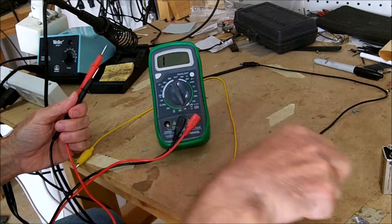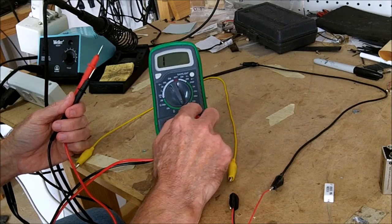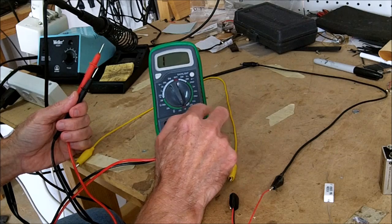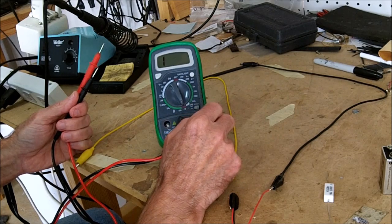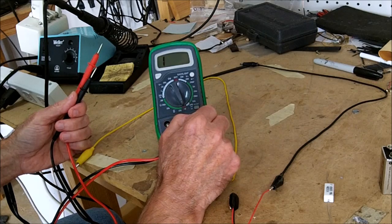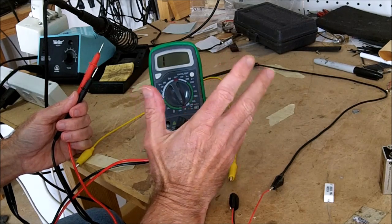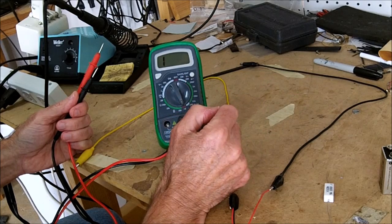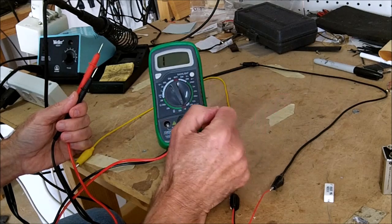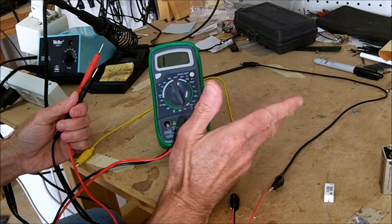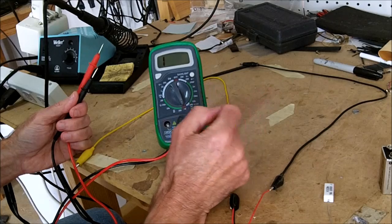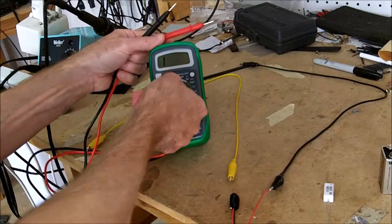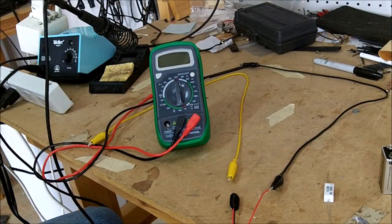So that's the basic functions you can use on the multimeter. On this particular multimeter, there are a few other functions. There's a connector down here where you can plug a transistor in and actually measure the gain of the transistor and tell whether the transistor is good or not. Like I said, you can go online and pull up the manual on the Velman website if you want to read about any of these things I've talked about or any of the other functions that the meter would perform. So thank you very much.